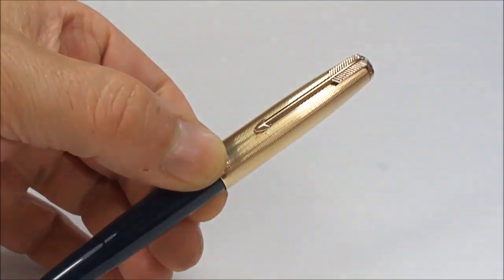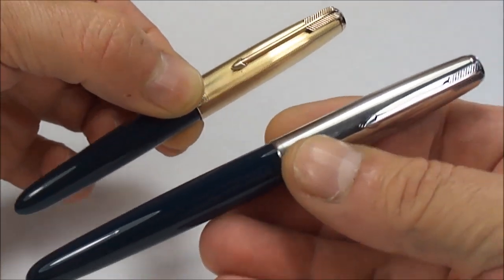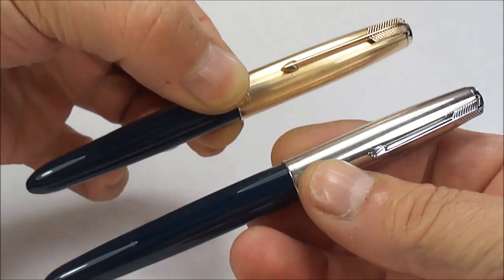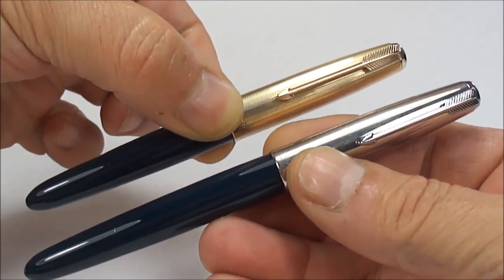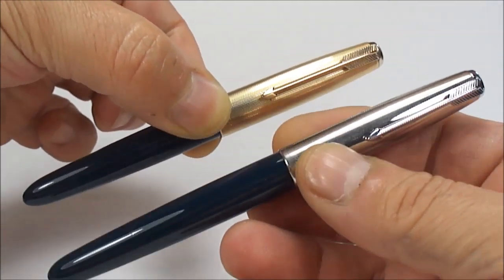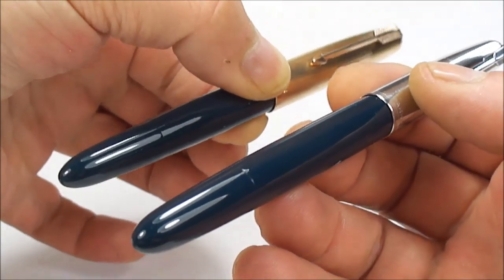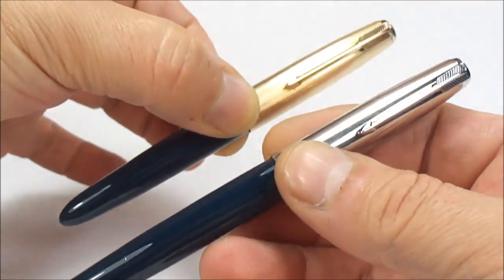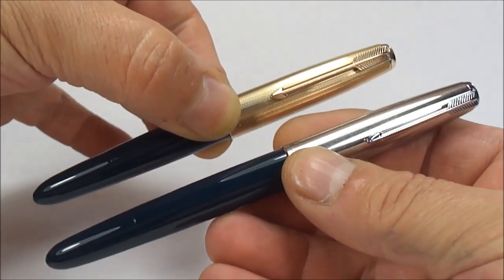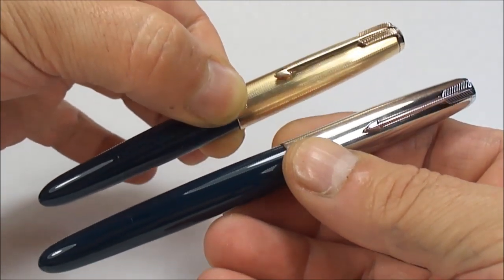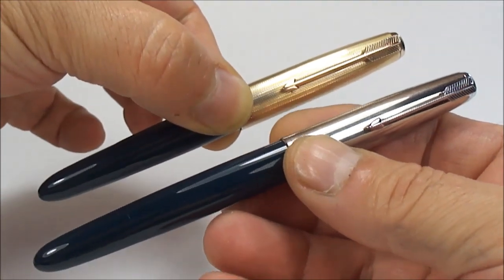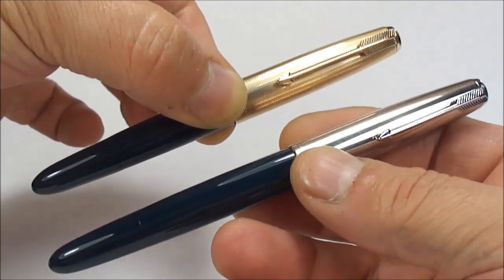Now size-wise, if we bring on a standard Parker, you can see the Demi at the top here is a lot shorter than the standard 51 at the bottom. Incidentally, the bottom one is also a lovely cedar blue, but as a size comparison you can see the Demi is quite a bit shorter than the standard 51.